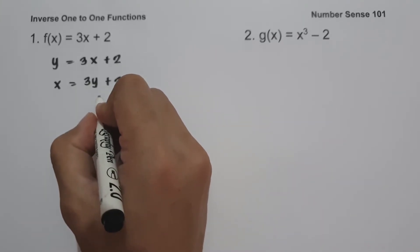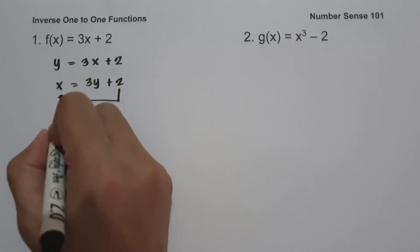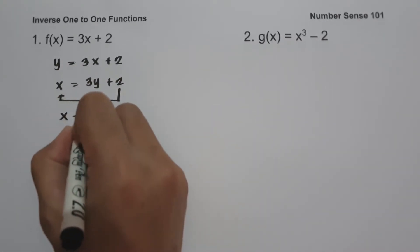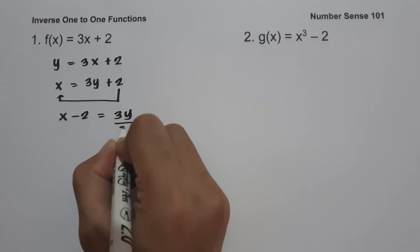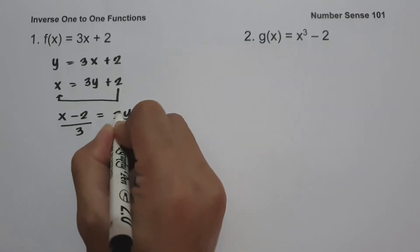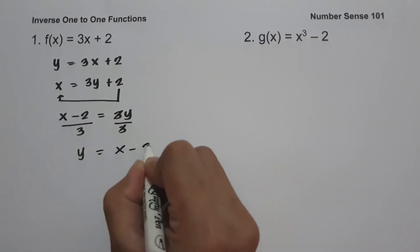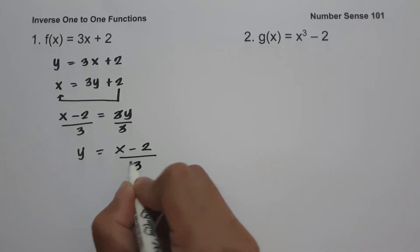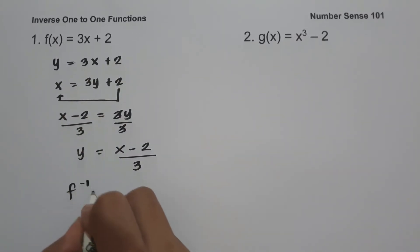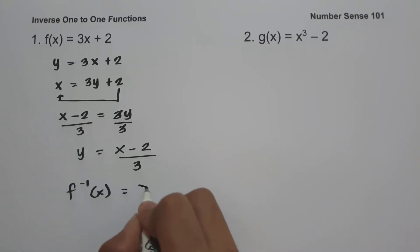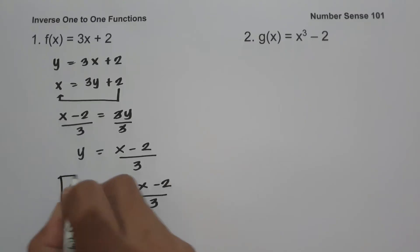Now let us solve for y in terms of x. Move 2 to the side of x, giving us x - 2 = 3y. Divide both sides by 3 and cancel. So y = (x - 2)/3. Therefore, the inverse of f(x) = 3x + 2 is f⁻¹(x) = (x - 2)/3, and this will be our answer.